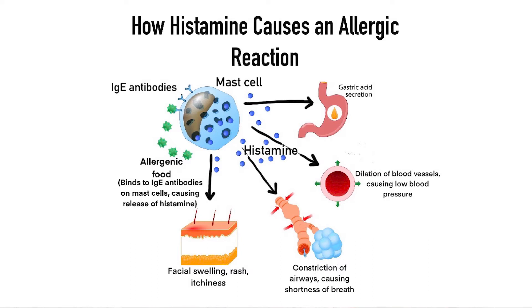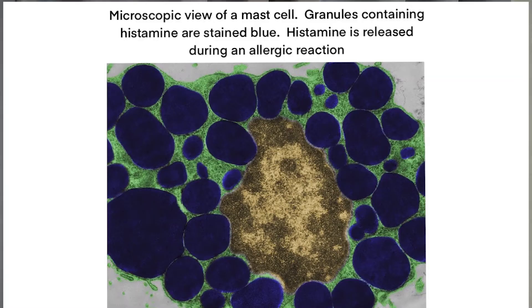When the offending food is ingested, the IgE antibodies are activated, resulting in a release of histamine from other immune cells. Histamine causes the classic symptoms of an allergic reaction which may include rash, itching, watery eyes, nose, facial or lip swelling, difficulty breathing, or sometimes even low blood pressure.